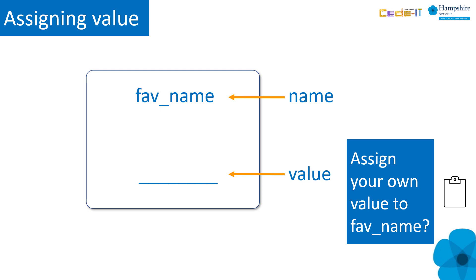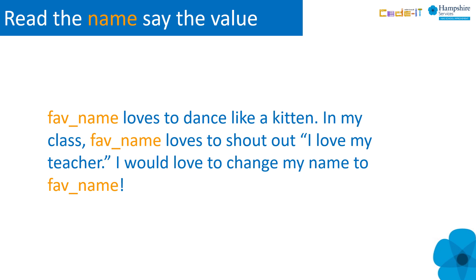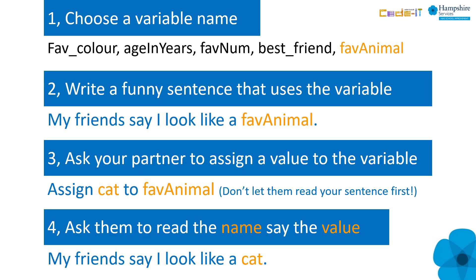Here, pupils are assigning a value to a variable called 'fave name'. Now the pupil is asked to read the name but act on the value. So if 'Sophie' was assigned to 'fave name' earlier, then this will read as 'Sophie loves to dance like a kitten'. In my class, Sophie loves to shout out 'I love my teacher'. Writing simple algorithmic examples helps ensure that more pupils will have some understanding of a placeholder variable concept before we actually get on to code.